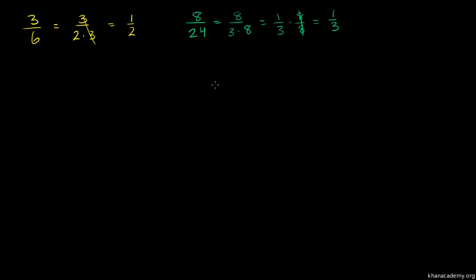The same exact idea applies to rational expressions. These are rational numbers. Rational expressions are essentially the same thing, but instead of the numerator and denominator being actual numbers, they're expressions involving variables. Let's say that I had 9x plus 3 over 12x plus 4. Now this numerator, we can factor it — we can factor out a 3.